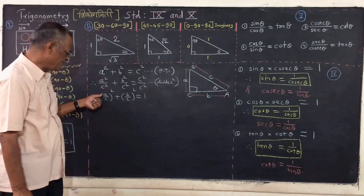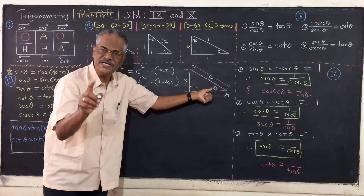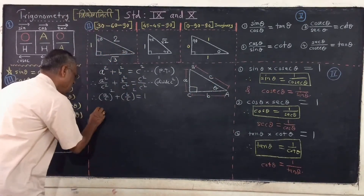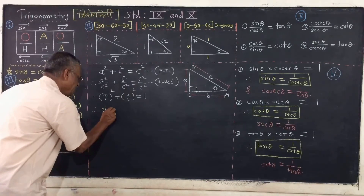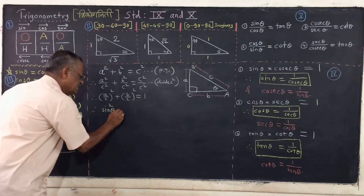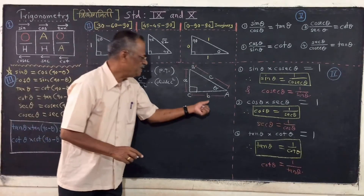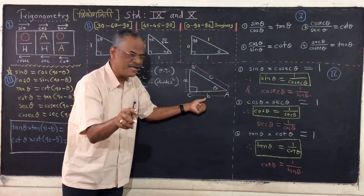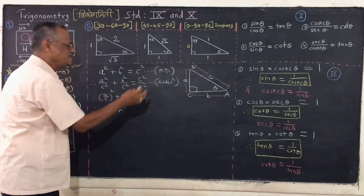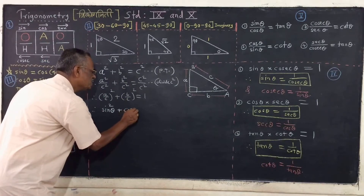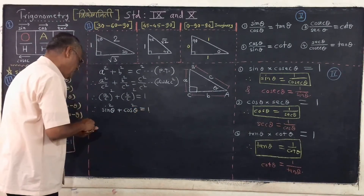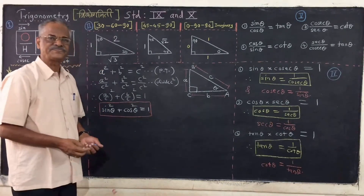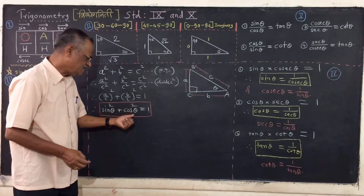Very interesting! You know that a upon c, with respect to theta, is sine theta — opposite upon hypotenuse is sine theta. So you can substitute here. It is nothing but sine squared theta plus cos squared theta is equal to 1. So we are getting a very, very important identity: sine squared theta plus cos squared theta equals 1.